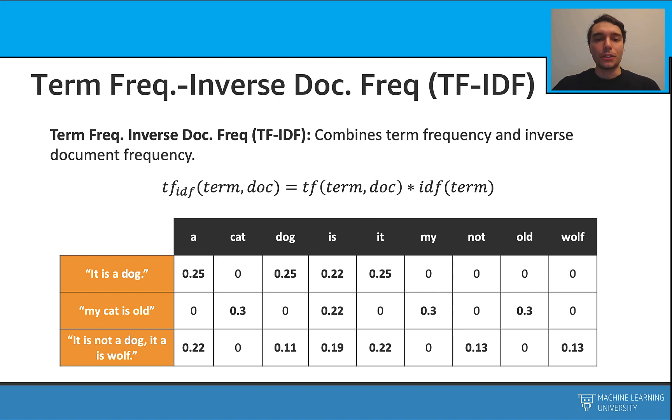Term frequency inverse document frequency, TF-IDF, combines the term frequencies and the inverse document frequency scores. Here we can give the IDF equation like this. When we calculate the TF-IDF for our sample documents, this is what we have.